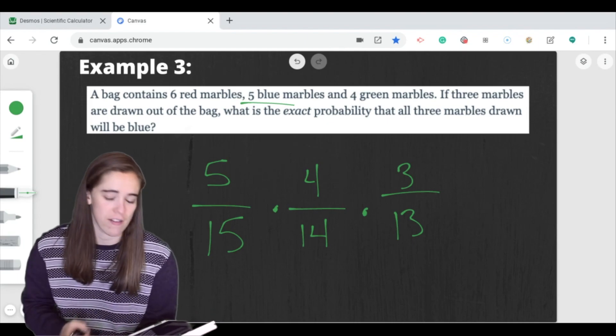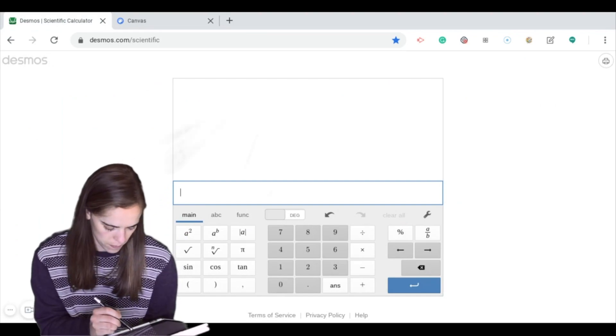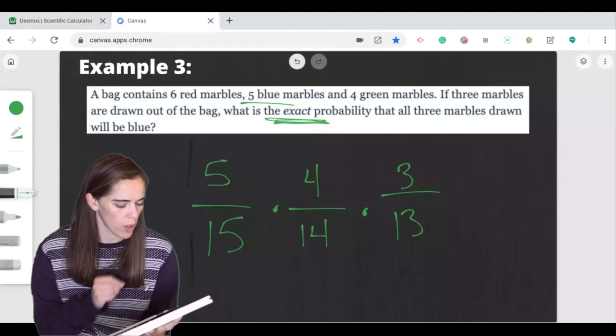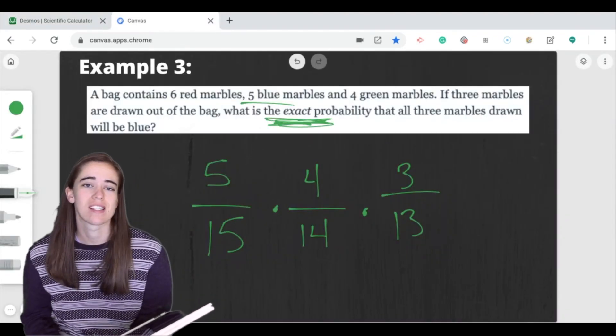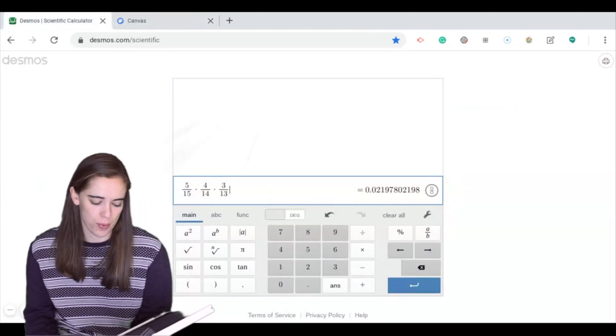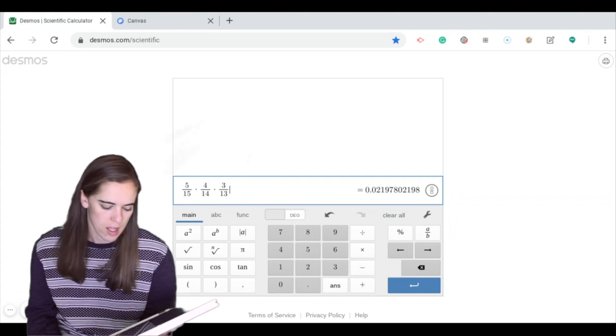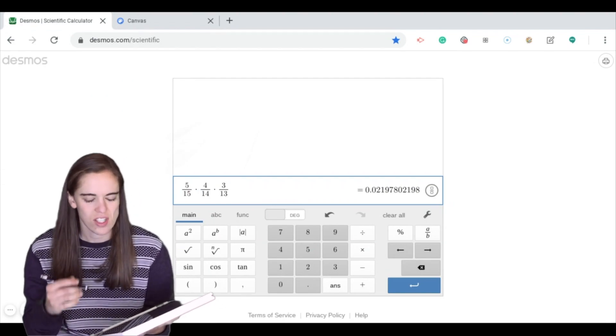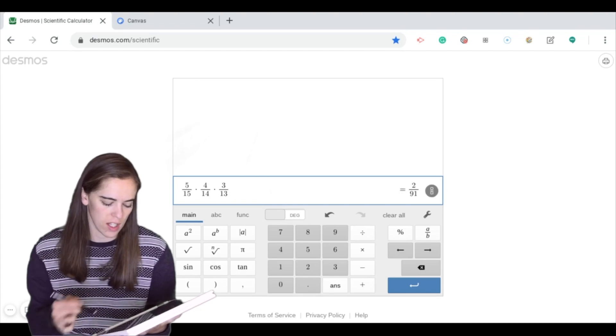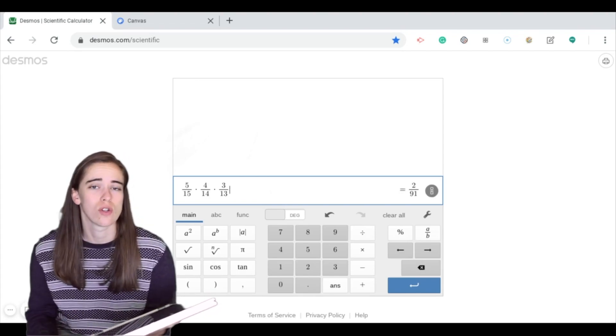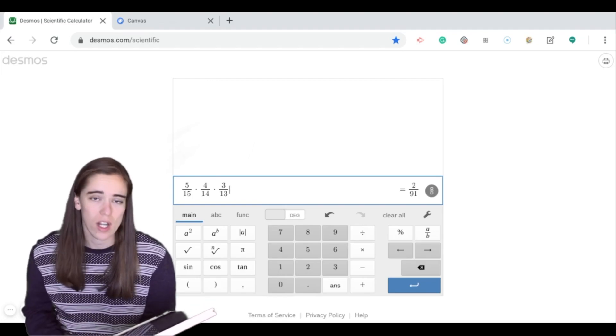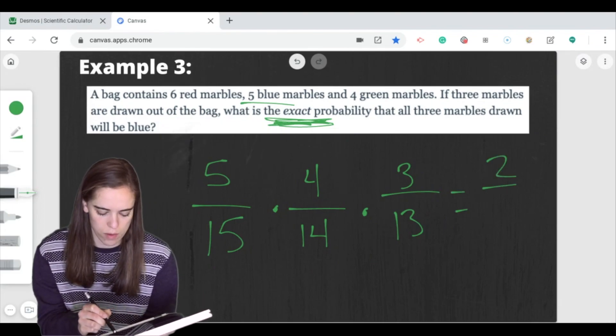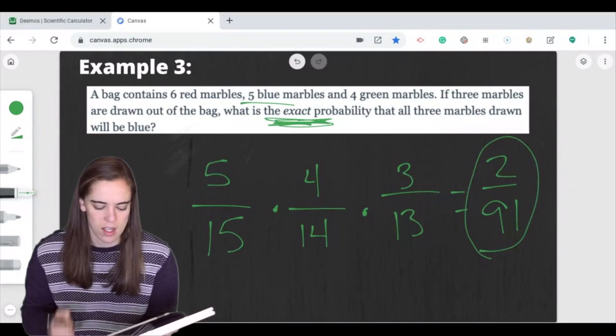We're going to have 5 15ths times 4 14ths times 3 13ths. All right, so on this one, once I type it all in, I get this nice long answer. But the problem is with this one, our original question said we need to know the exact probability. And although this is pretty detailed, it's not exact because my calculator is still rounding. So if you're using Desmos, this is a really handy feature. You'll see right next to my answer, there's something that looks a little bit like an empty fraction in a circle. If I just click that, it actually converts that equation to the actual fraction that the decimal was equal to. So this one, it's going to be equal to 2 over 91. So this is going to be equal to 2 over 91, and that's going to be my exact probability.